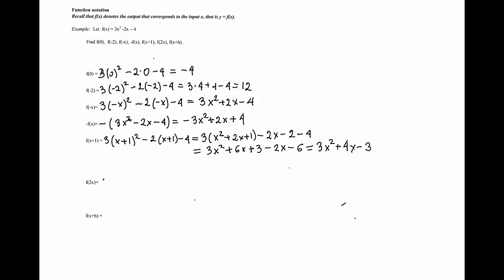Similarly, we will deal with f(2x). This time 2x is replacing every x in the formula. The result is 3(2x)² - 2(2x) - 4, which is 3(4x²) - 4x - 4, or 12x² - 4x - 4.